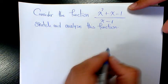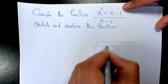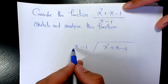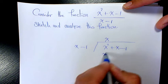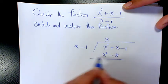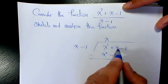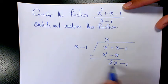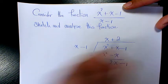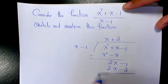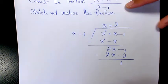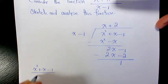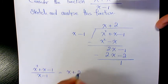The first thing I'm going to do is long division: (x² + x − 1) divided by (x − 1). x² divided by x is x; multiply to get x² − x; subtract — x² cancels, leaving 2x; bring down −1, giving 2x − 1. Then 2x divided by x is 2; multiply to get 2x − 2; subtract to get remainder 1. So x² + x − 1 over x − 1 equals x + 2 + 1/(x − 1).